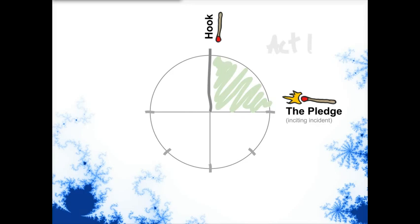Act one is called The Pledge, and it's named after the incident that concludes act one — the inciting incident, The Pledge. In this first act, you show your hero and what his life is like, what his personality is like. You introduce other main characters, especially who the antagonist is, though it's not important to show too much how powerful the antagonist is yet. You need to show how things were as the story begins. The Pledge is when the hero starts on a quest — some incident that happens that changes everything. So the hero's life is one way in act one, and then the Pledge happens and everything changes dramatically.